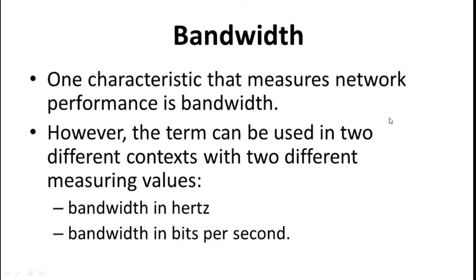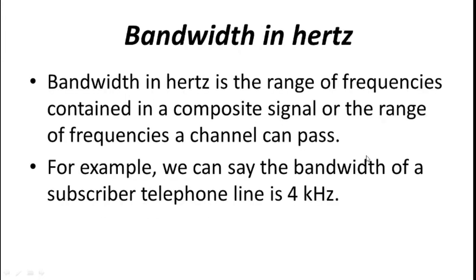Number one is bandwidth. One characteristic that measures the network performance is bandwidth. However, the term can be used in two different contexts with two different measuring values. One is bandwidth in Hertz, another one is bandwidth in bits per second. Bandwidth in Hertz is the range of frequencies contained in a composite signal, or the range of frequencies a channel can pass. For example, the bandwidth of a subscriber telephone line is four kilohertz.